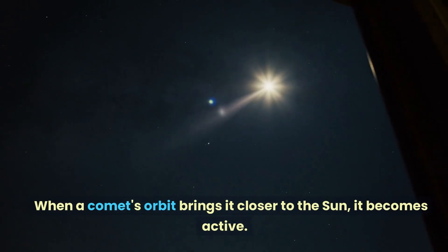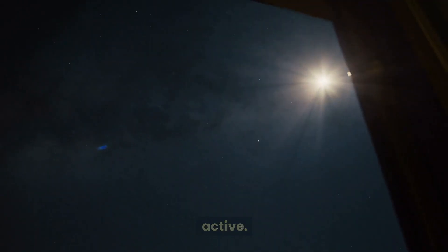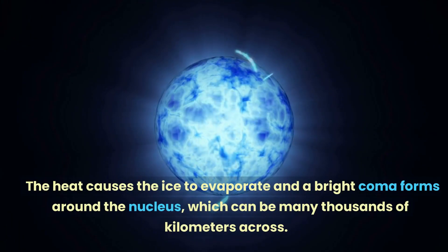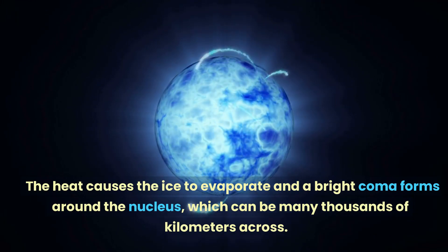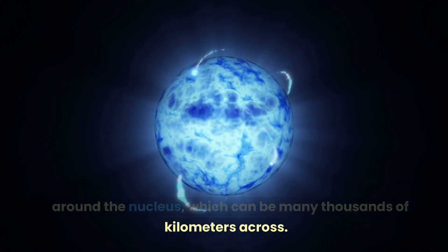When a comet's orbit brings it closer to the sun, it becomes active. The heat causes the ice to evaporate and a bright coma forms around the nucleus, which can be many thousands of kilometers across.